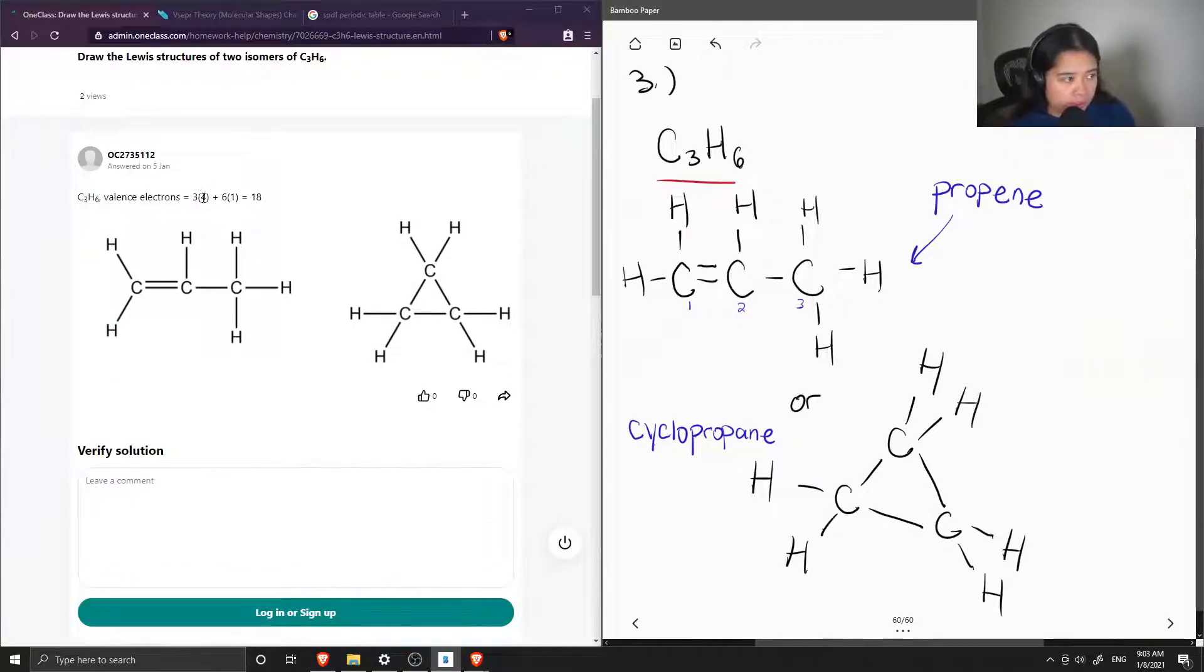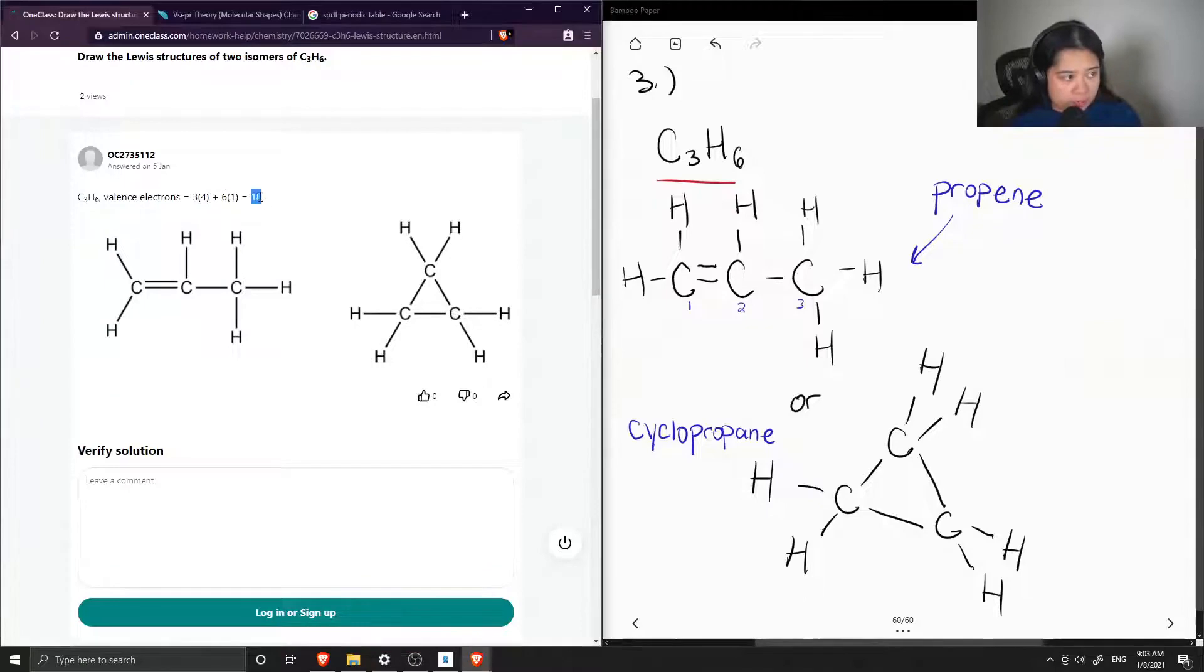There are three carbon atoms, each with four valence electrons, and six hydrogen atoms, each with one valence electron, for a total of 18. If we double-check and count the electrons